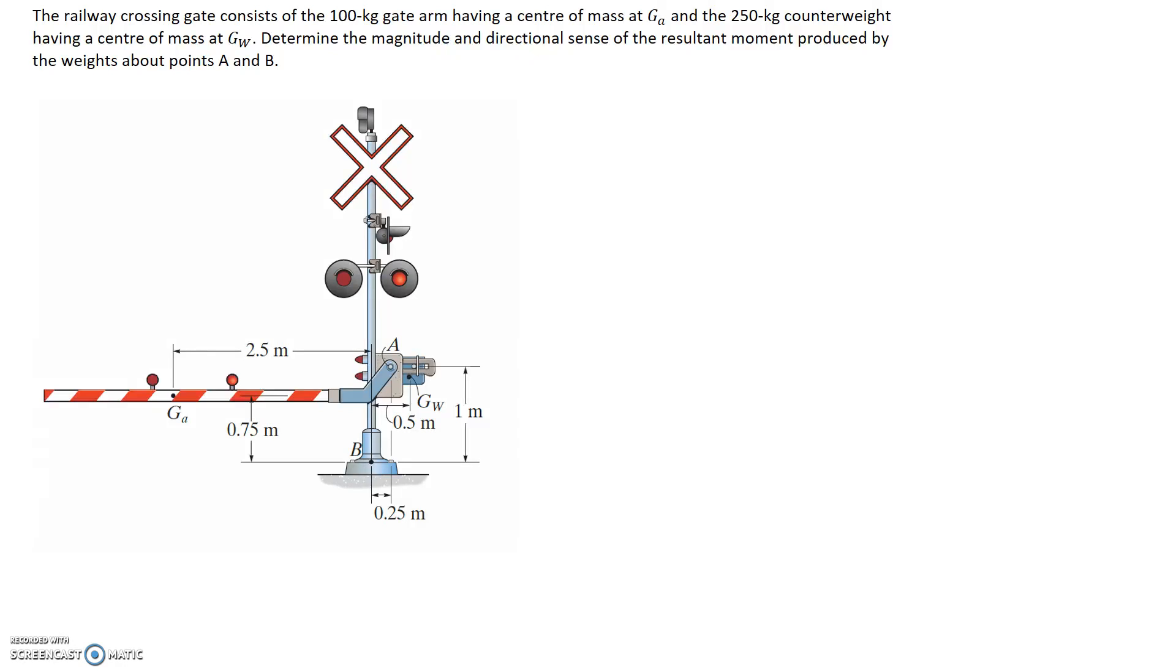The railway crossing gate consists of the 100 kg gate arm having a centre of mass at G_A and the 250 kg counterweight having a centre of mass at G_W. Determine the magnitude and directional sense of the resultant moment produced by the weights about points A and B.